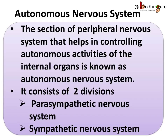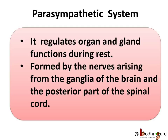To sum up what we learnt today: the section of the peripheral nervous system that helps in controlling autonomous activities of the internal organs is known as the autonomous nervous system. It consists of two divisions: the parasympathetic nervous system and the sympathetic nervous system. The parasympathetic system regulates organ and gland functions during rest — it controls activities that decrease energy expenditures, meaning energy is conserved. It is formed by the nerves arising from the ganglia of the brain and the posterior part of the spinal cord.